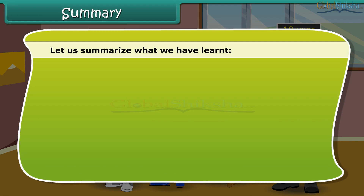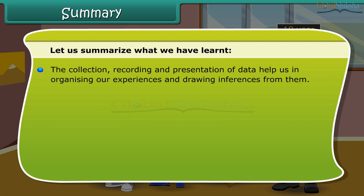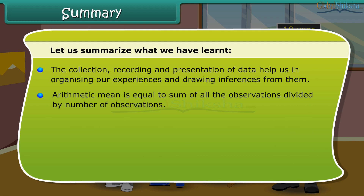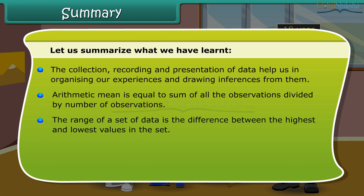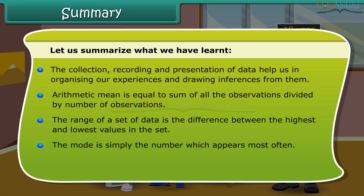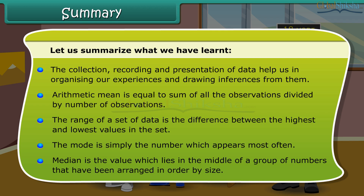Let us summarize what we have learned. The collection, recording and presentation of data help us in organizing our experiences and drawing inferences from them. Arithmetic mean is equal to the sum of all the observations divided by the number of observations. The range of a set of data is the difference between the highest and lowest values in the set. The mode is simply the number which appears most often. Median is the value which lies in the middle of a group of numbers that have been arranged in order by size.